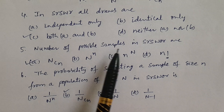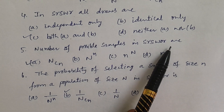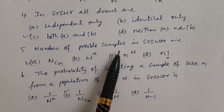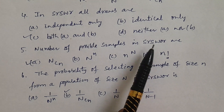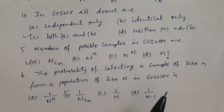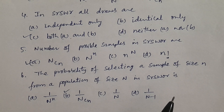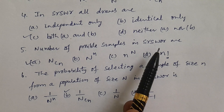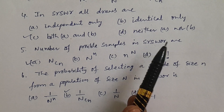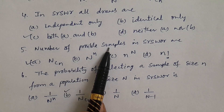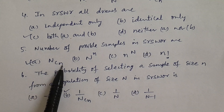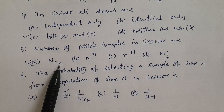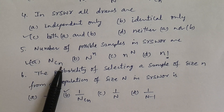Number of possible samples in SRSWOR: in SRSWR the formula is capital N power small n; in SRSWOR the formula is capital N C small n. The answer is capital N C small n.